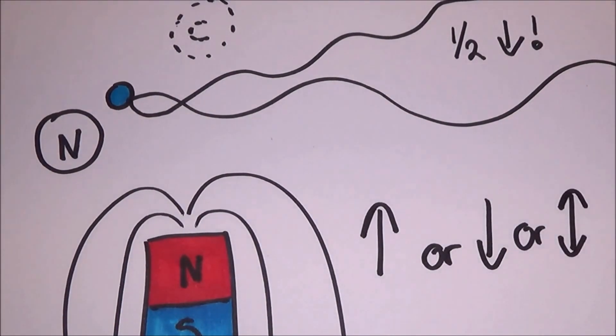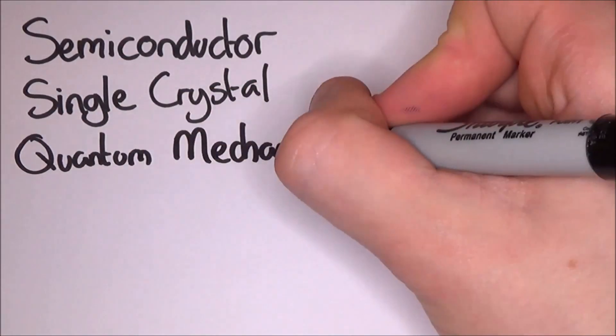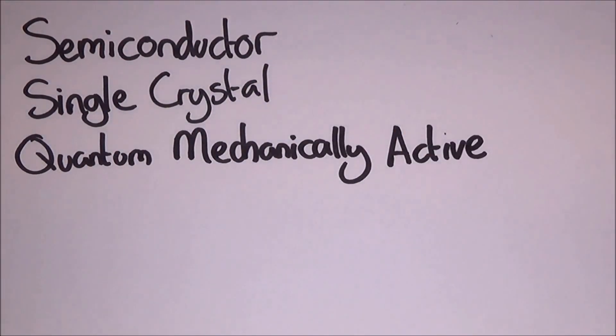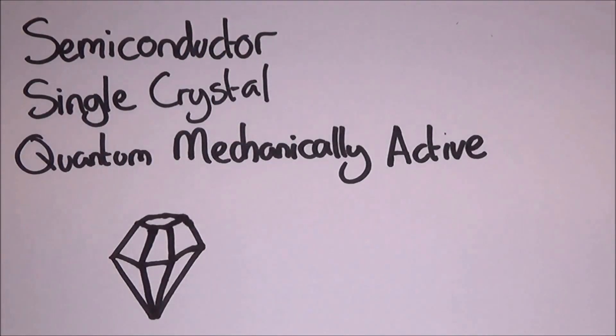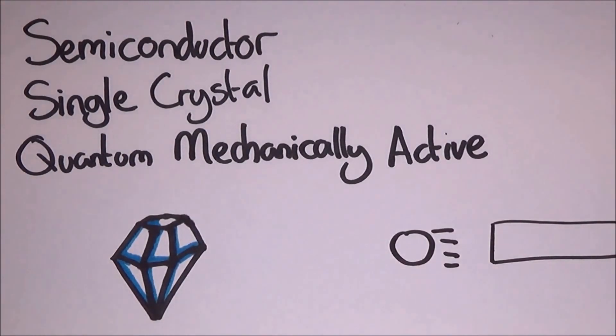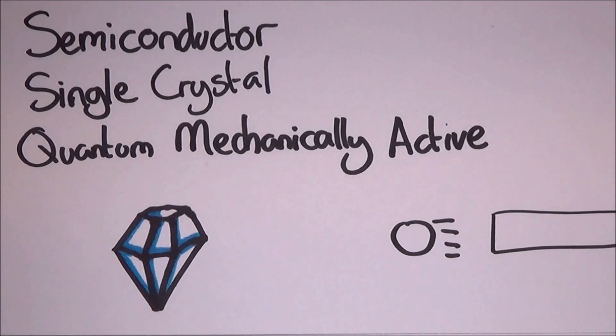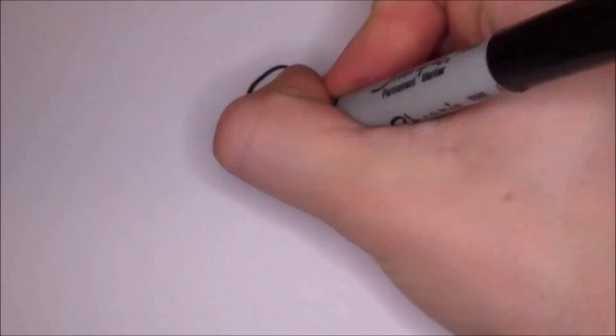So what we end up is a semiconductor single crystal quantum mechanically active chip. They can be made in the lab to create perfect diamonds and then fire nitrogen atoms into it, effectively smashing it up so the nitrogen atoms end up next to a missing carbon atom. Then you can trap all the electrons. Once trapped, you can then manipulate the spins to your own design.